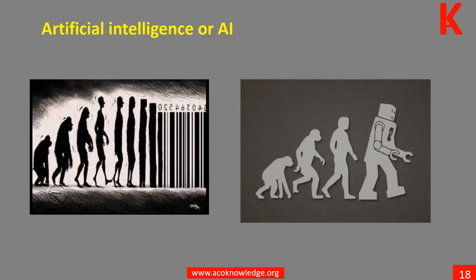Unit 7 discusses further advances in information science and technology. Artificial intelligence comes to replace much of the complex human work of doctors, lawyers, engineers, teachers, and others. Big data analytics allows detection of a terrorist act even before it happens.